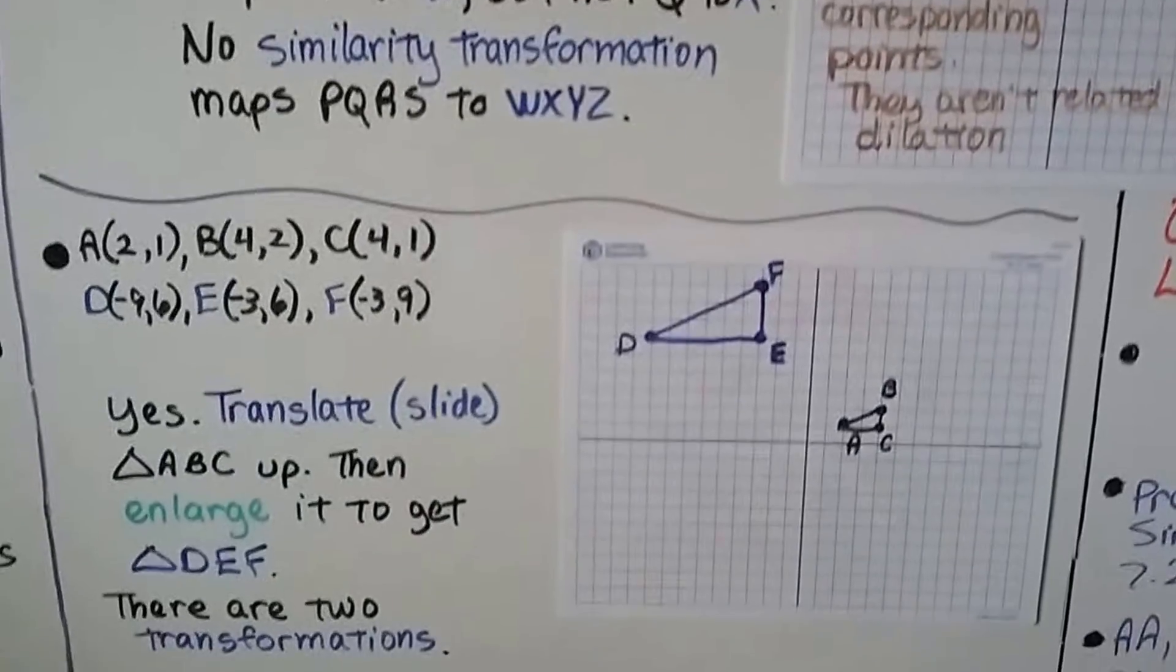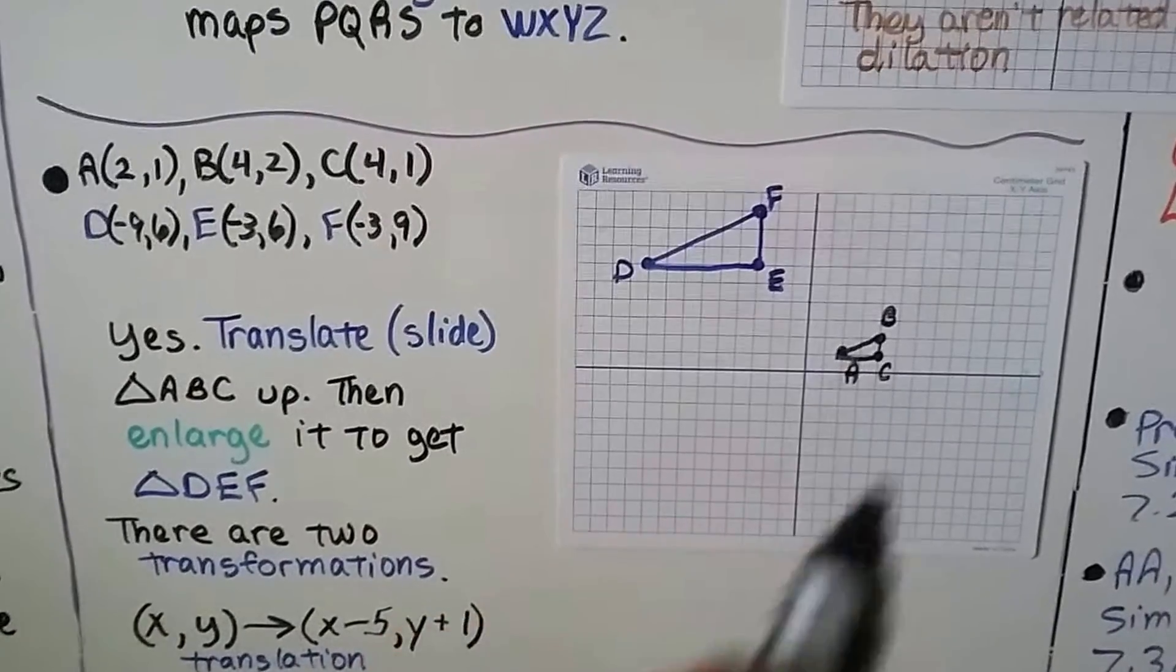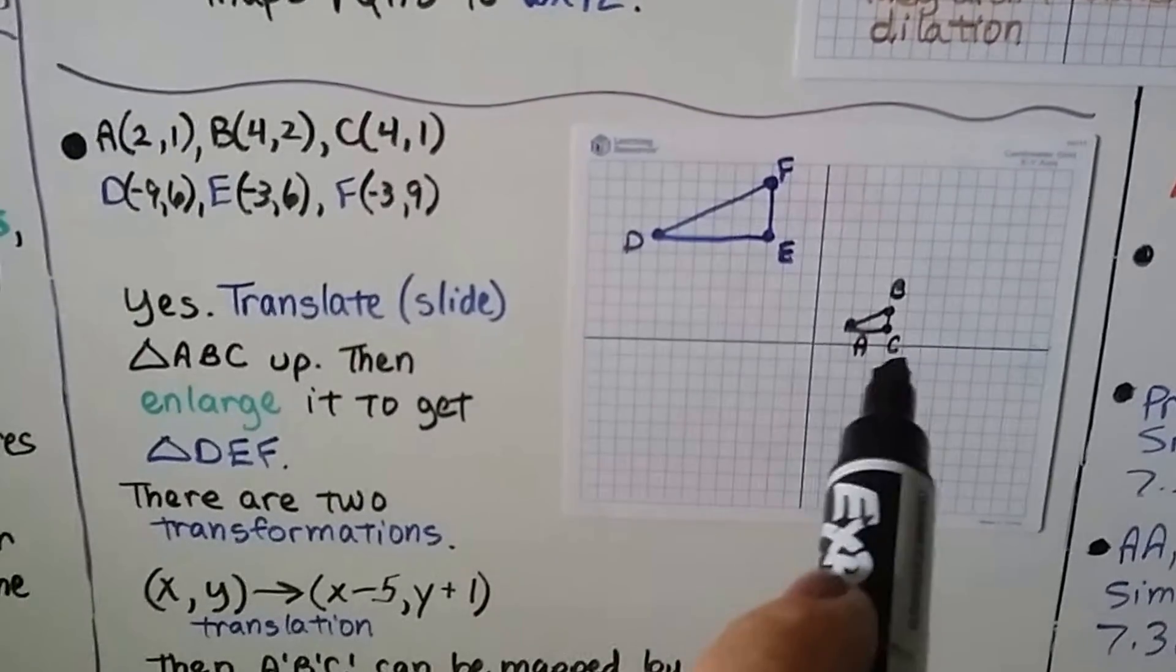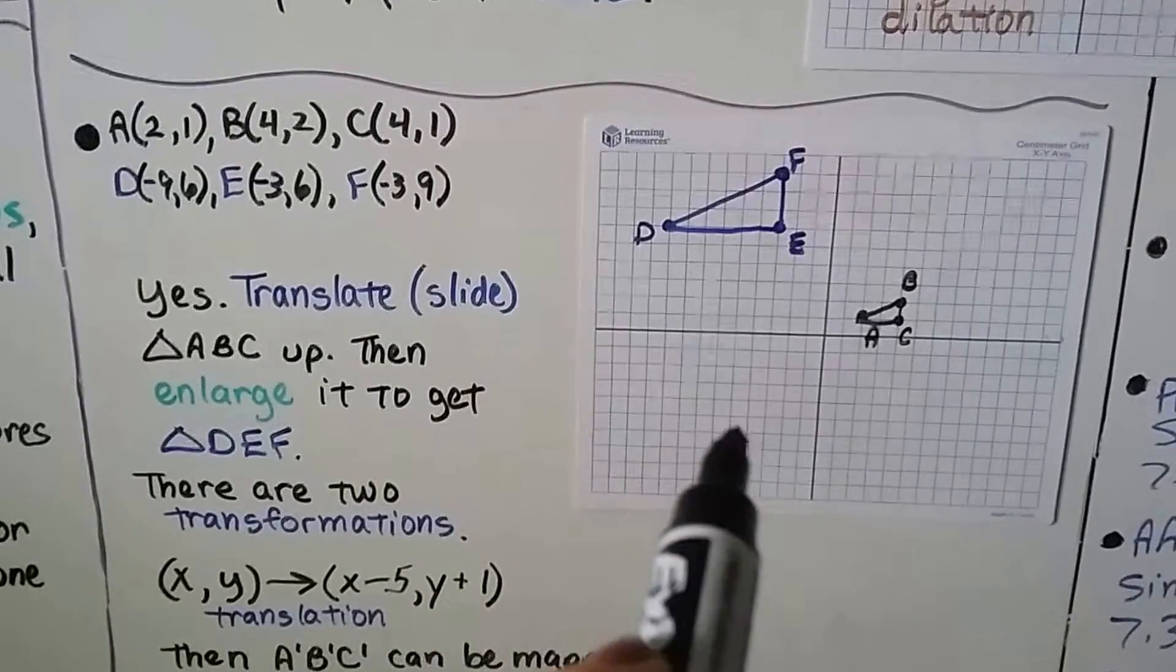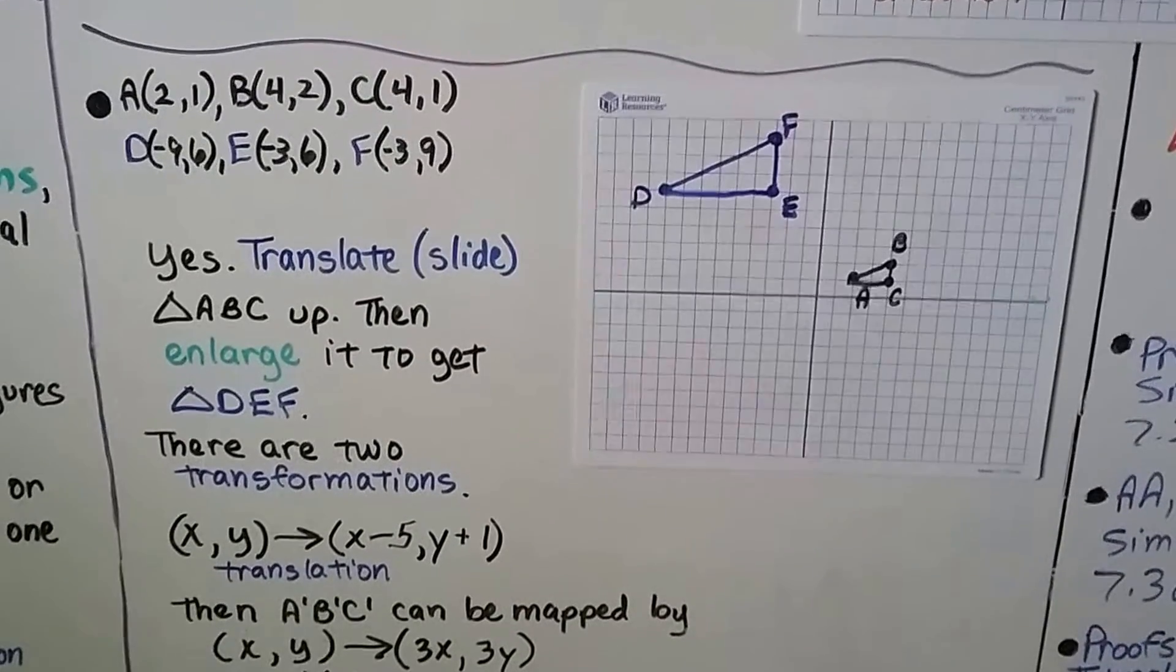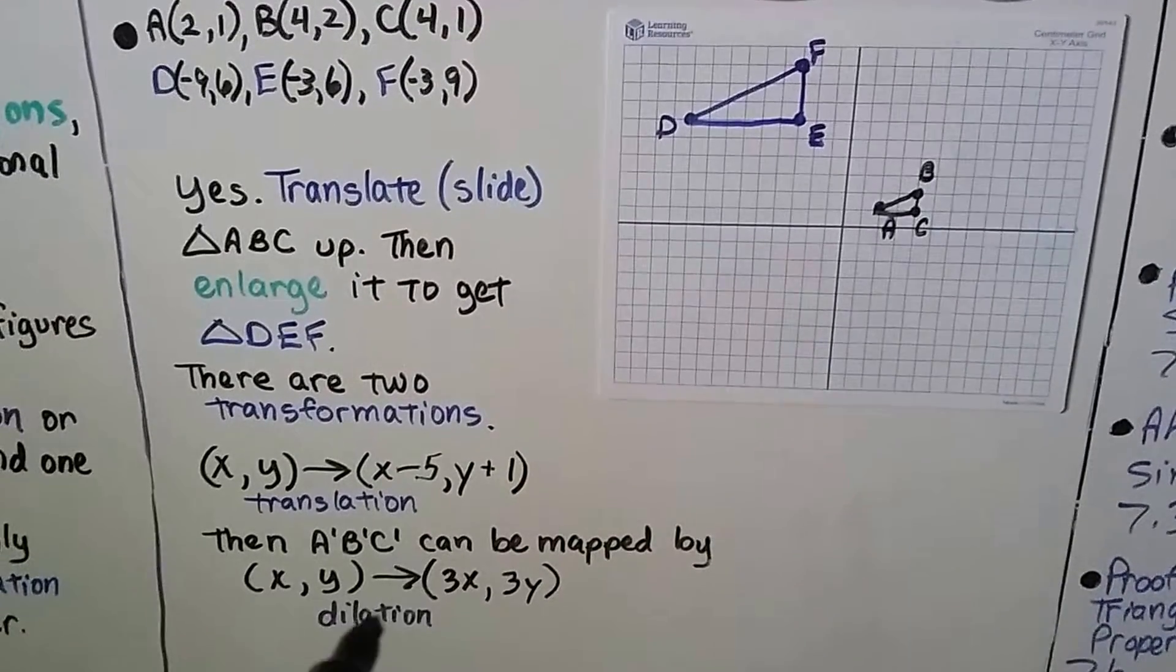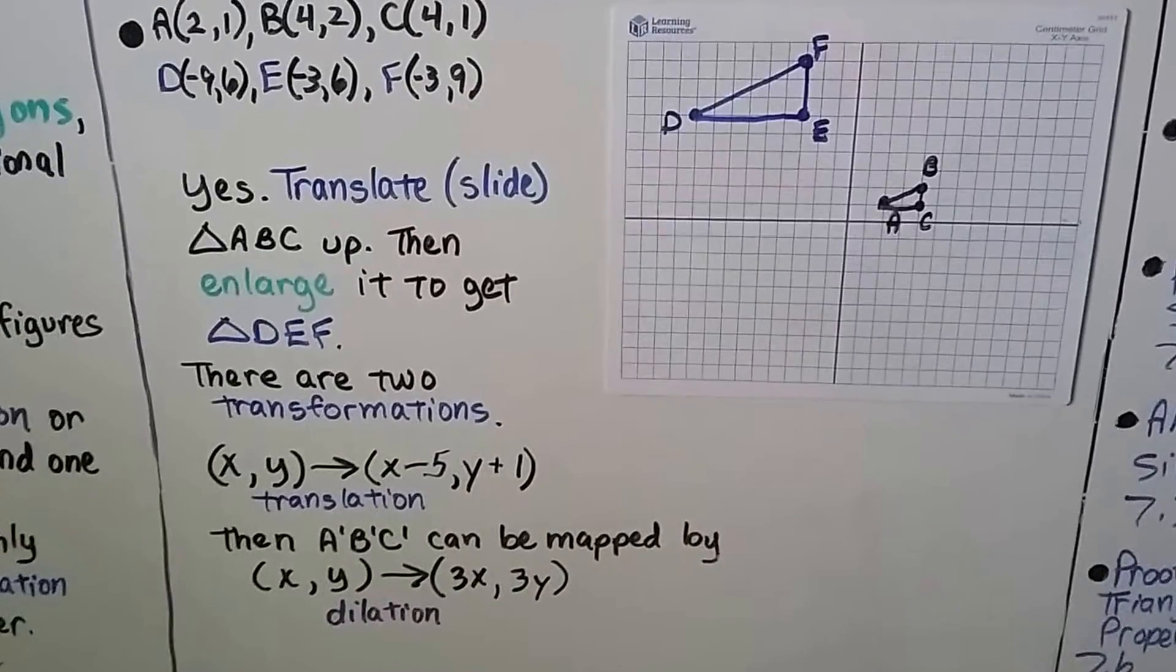So now we've got this one. We've got ABC in the ordered pairs and we plot them and we get this little triangle. And we've got DEF and we plot them and we get this bigger blue triangle. And yes, if we translate slide little ABC up and enlarge it, we'll get DEF. So there's two transformations. First we do (x-5, y+1). Then we'll have A prime, B prime, C prime that can be mapped by (3x, 3y) for a dilation.